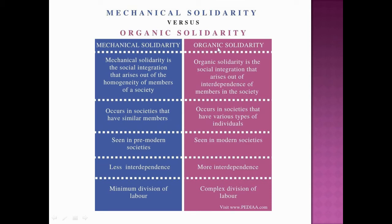On the other hand, organic solidarity is social integration that arises out of the interdependence of members in the society. People depend upon one another because of extreme division of labor. Mechanical solidarity exists where people are similar to each other, whereas organic solidarity exists where people are not alike but depend on each other.